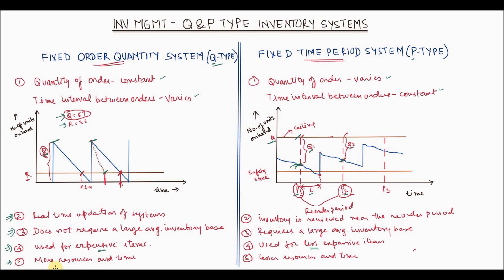Point number five is that Q type of system requires more resources and time because you have to maintain the system real time and keep the records accurate. Whereas the P type system requires less resources and time.